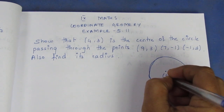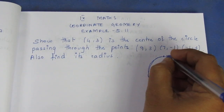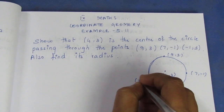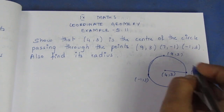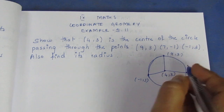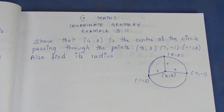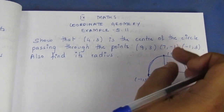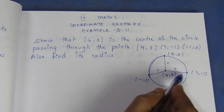The center of the circle is (4,3). In one circle, the distances from the center to all points on the circle are equal — that distance is the radius. So if we can show that the distance from center (4,3) to each of the three given points is equal, we prove it is the center. We use the distance formula.